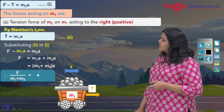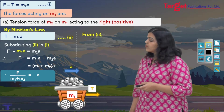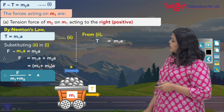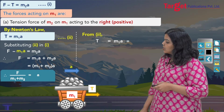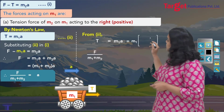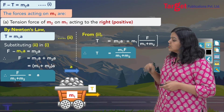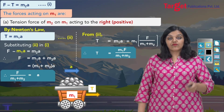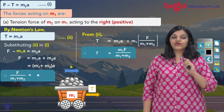Tension is the only unknown left. Substituting the expression for acceleration into T equals m1a, I get T equals m1F divided by (m1 plus m2). These are my equations of motion — I found all the unknowns, and this is how you solve the equations of motion for the first example.